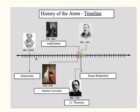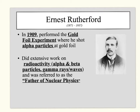Fast forwarding a few years, we are introduced to J.J. Thompson's student, Ernest Rutherford. Rutherford lived from 1871 to 1937, and in 1909, he performed the gold foil experiment, where he shot alpha particles at a piece of gold foil. He did extensive work on radioactivity, which is why we call him the father of nuclear physics — he dealt with alpha and beta particles, and gamma rays.